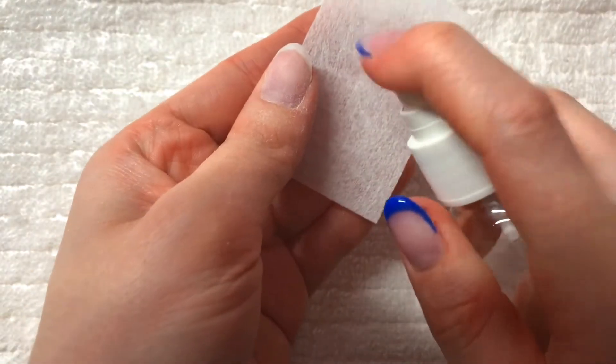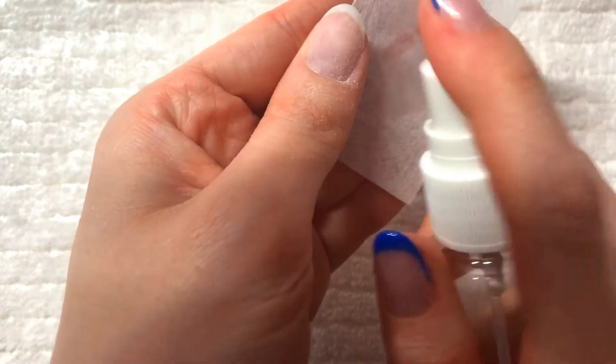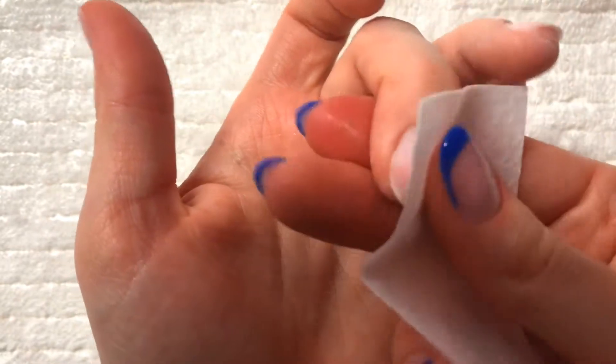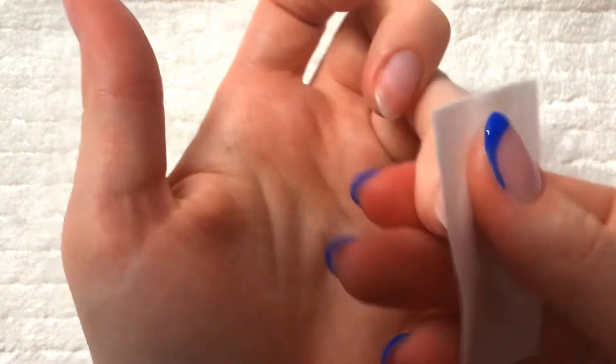Once my nails are all prepped, I am taking a lint-free wipe and some rubbing alcohol and just removing all of the dust and any extra bacteria off of my nails. You can also use 100% pure acetone to get rid of any oils that you might possibly have on your nails.